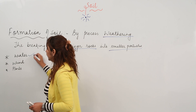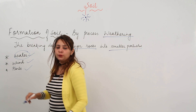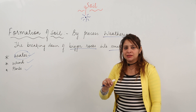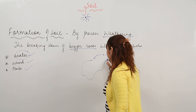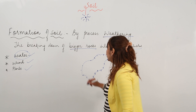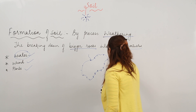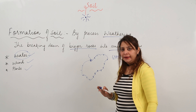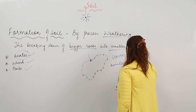Weathering is influenced by water, wind, and plants. First, let's discuss water. Rocks have certain pores and cracks in them — their surfaces are not smooth. When water flows into these cracks, which are also called crevices, it gets trapped inside the rock.